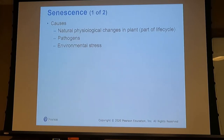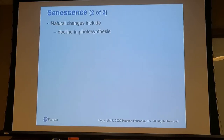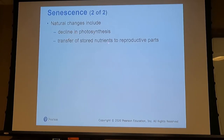Senescence can also be caused by pathogens or environmental stress. If the metabolic rate happens faster than the plant can handle — for instance, increasing temperature for a long period with consistent light — we can actually speed up the plant's life cycle. At some point there's a decline in photosynthesis, and the energy from photosynthesis is stored to reproductive parts.